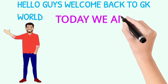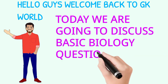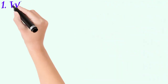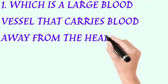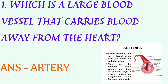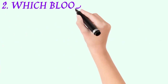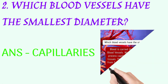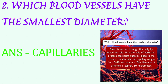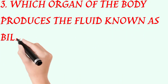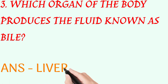Hello guys, welcome back to GK World. Today we are going to discuss basic biology questions. Which is a large blood vessel that carries blood away from the heart? Answer: artery. Which blood vessels have the smallest diameter? Answer: capillaries. Which organ of the body produces the fluid known as bile? Answer: liver.